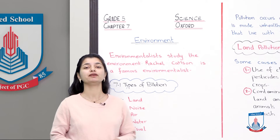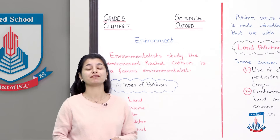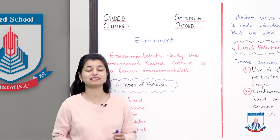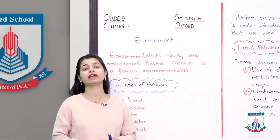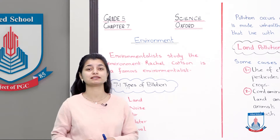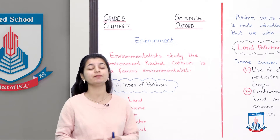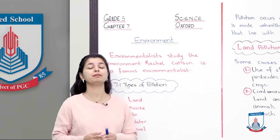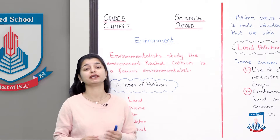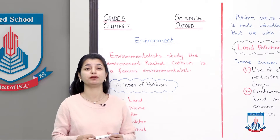Today we are about to start unit number 7.1. Unit 7.1 is the part on pollution, which is part of the environment, and we have to discuss different types of pollution.